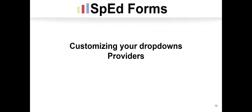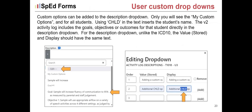Now we'll look at the other drop-down on the activity log — the description. When you click edit in that description drop-down, the value stored will be exactly the same as the display column. If you use 'CHLD' (capital C, H, L, D), it will insert that student's name in the drop-down. You have to be on an activity log to update your drop-down, but the options you add will be available on every student you go to — that's why you would type 'CHLD' rather than the actual child's name.